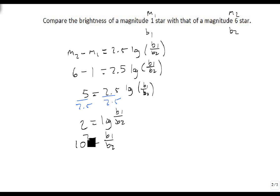So 10 squared equals B1 over B2, which means 10 squared is 100. That means that B1 is equal to 100 times B2. And now we've successfully figured out that B1 is 100 times brighter than B2.